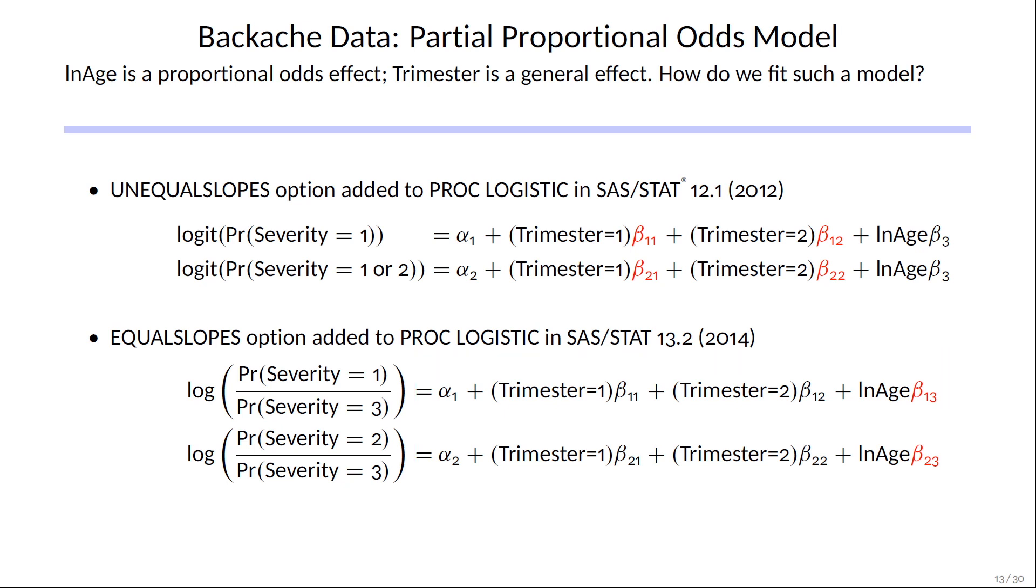The equal slopes option can change some or all of the general predictors, watch the log age parameter, to be proportional odds predictors.